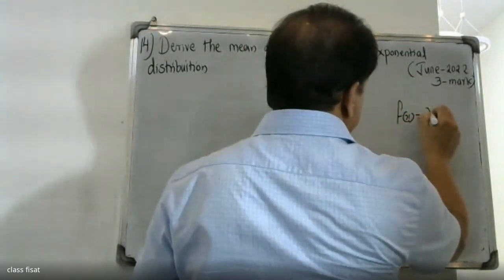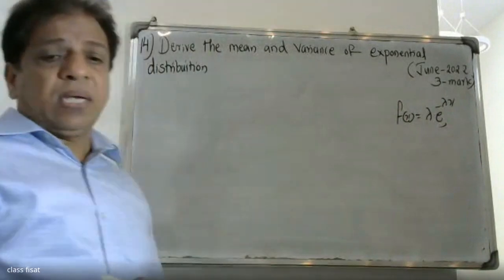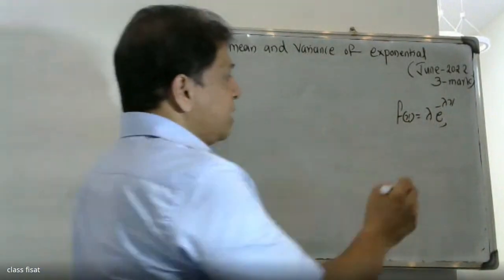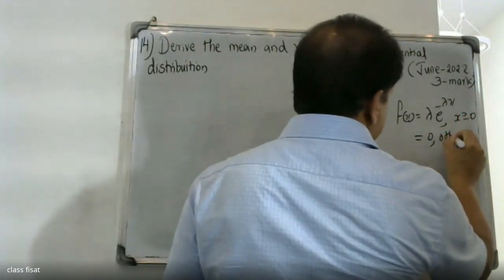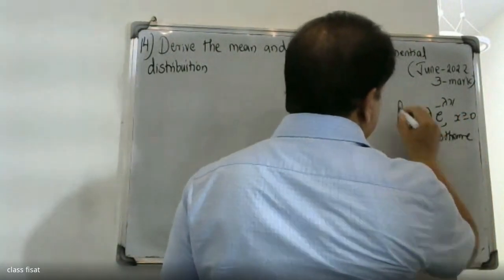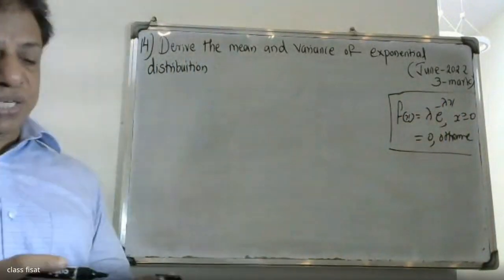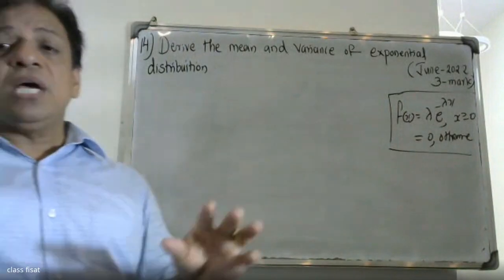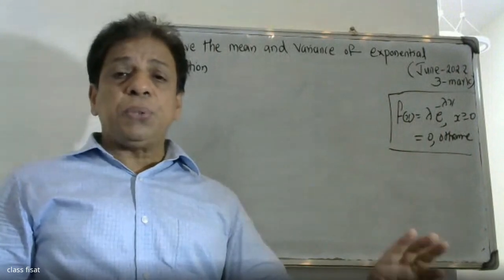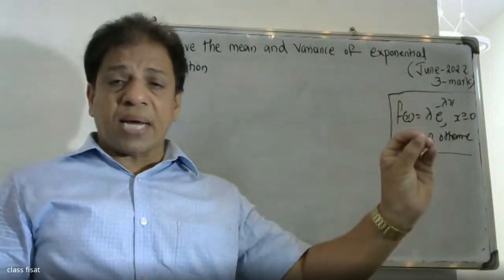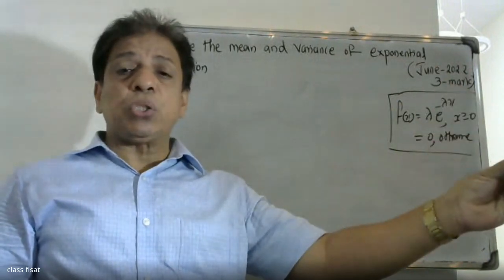The probability density function of the exponential distribution is: f of x is equal to lambda into e raised to minus lambda x, where x is greater than or equal to 0.